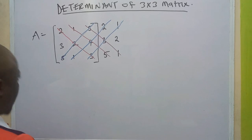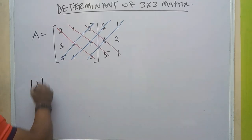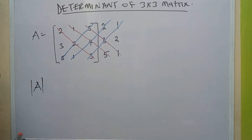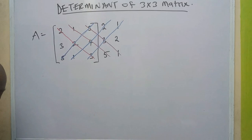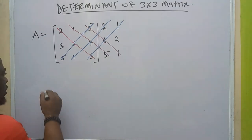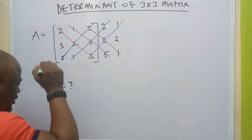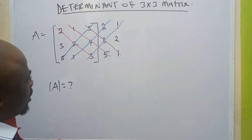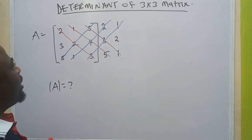How do we find the determinant? The determinant is denoted by vertical bars around the matrix. If you are finding the determinant, this is how you put it down — it is denoted by that. We want to find the determinant, and now here is how we do it using this first method.